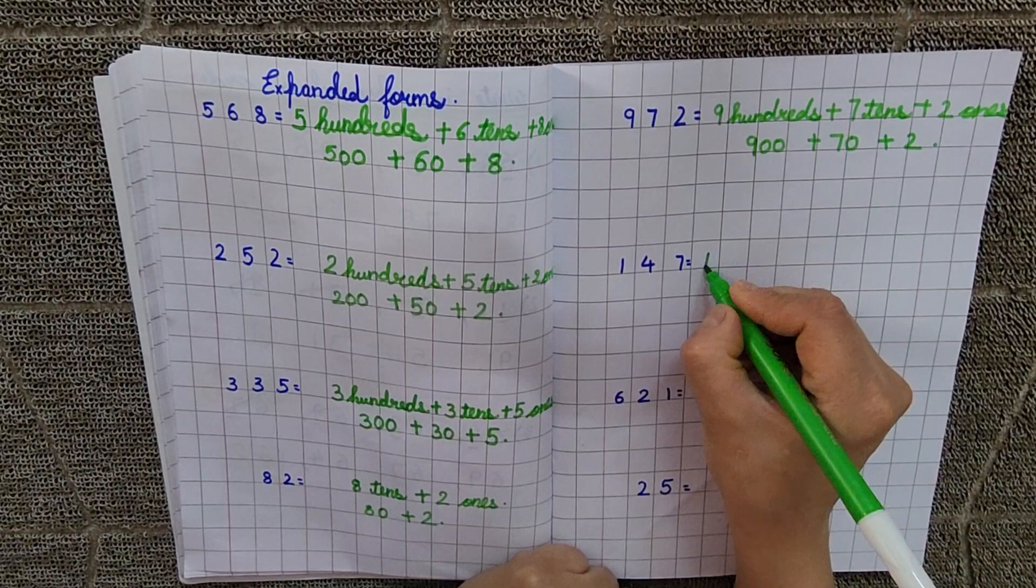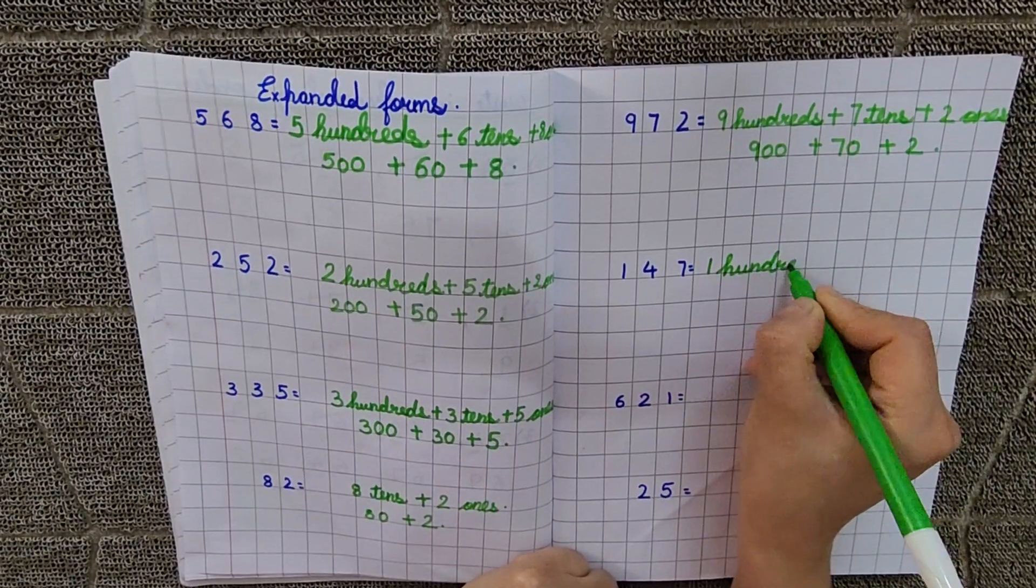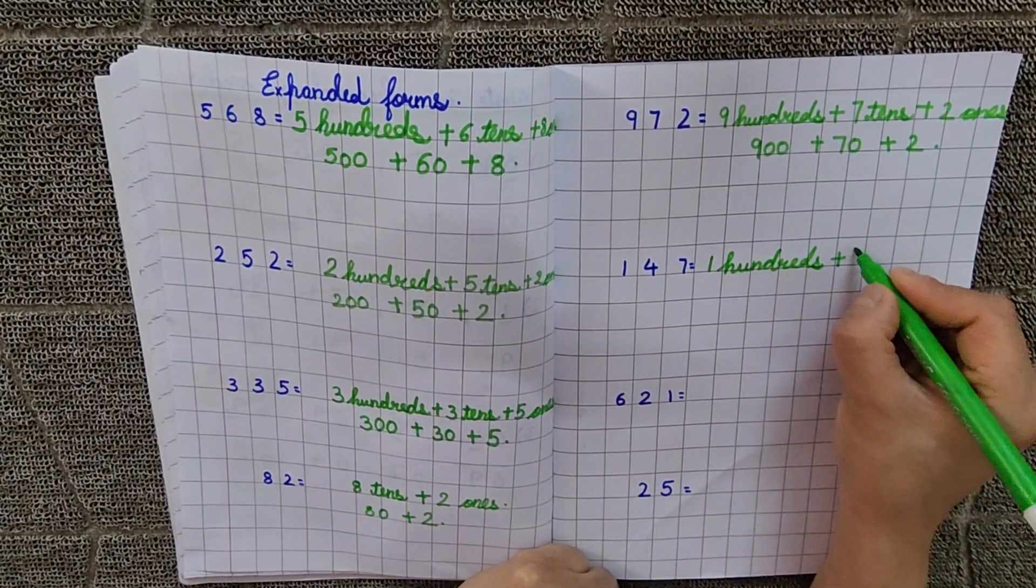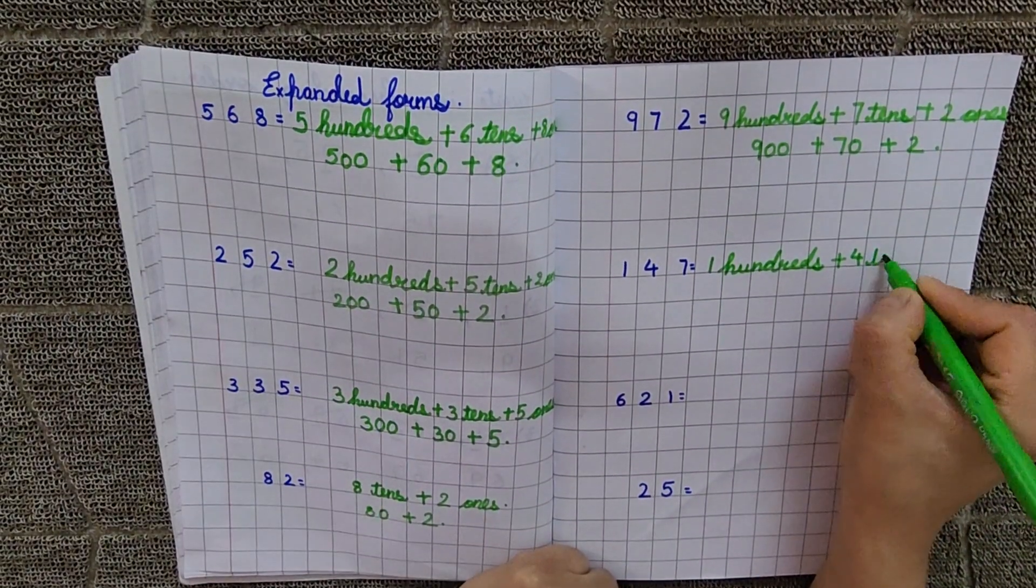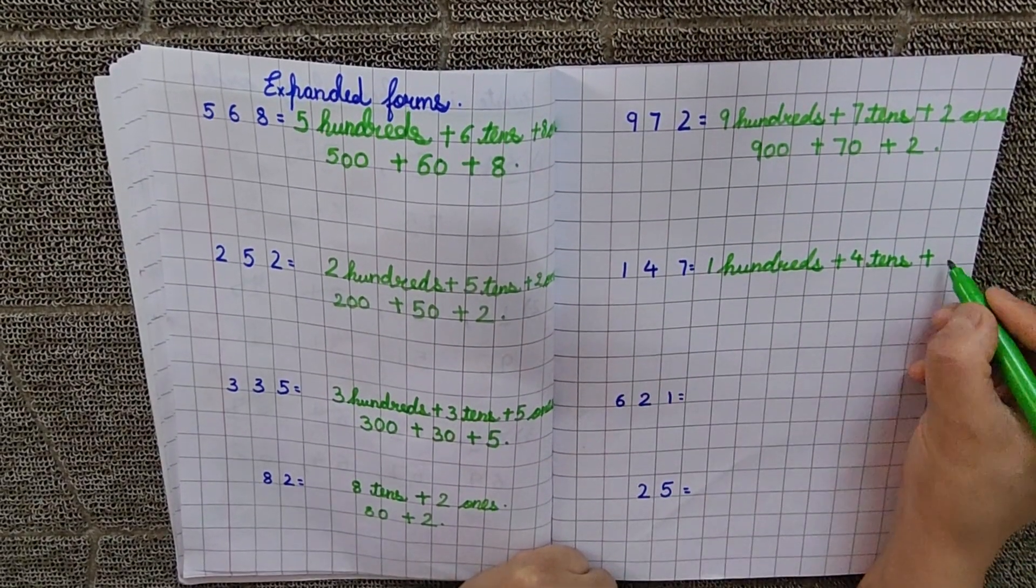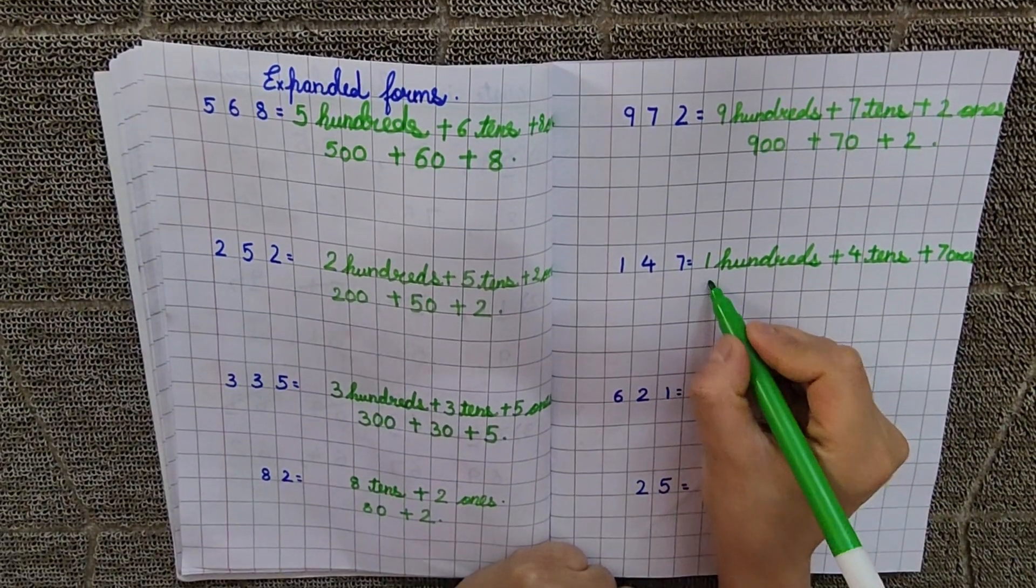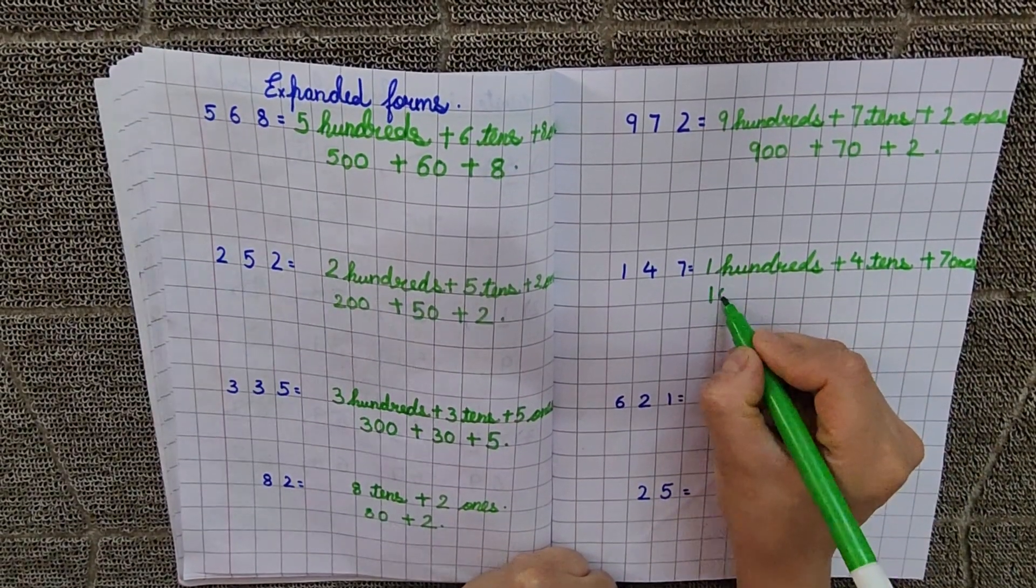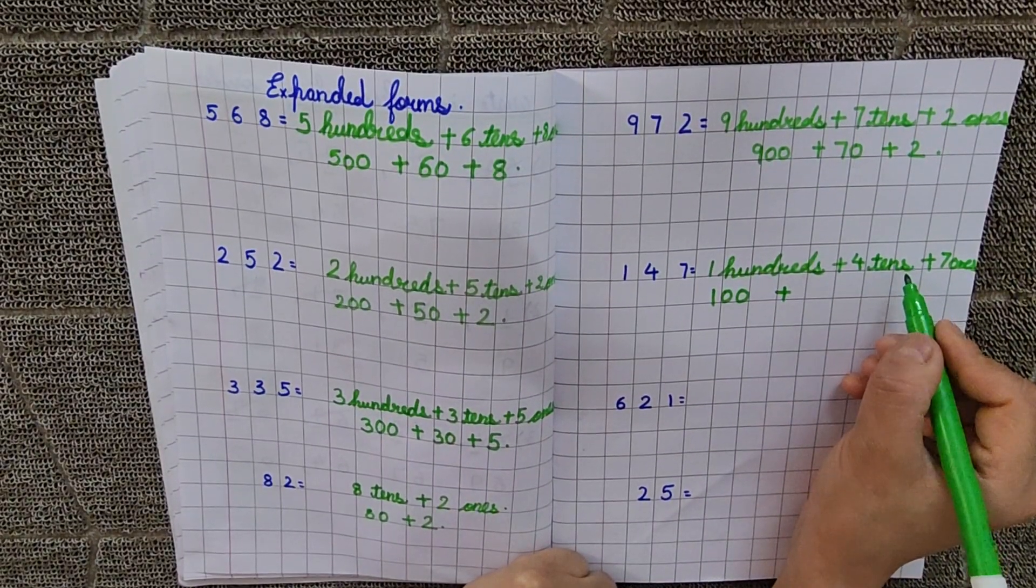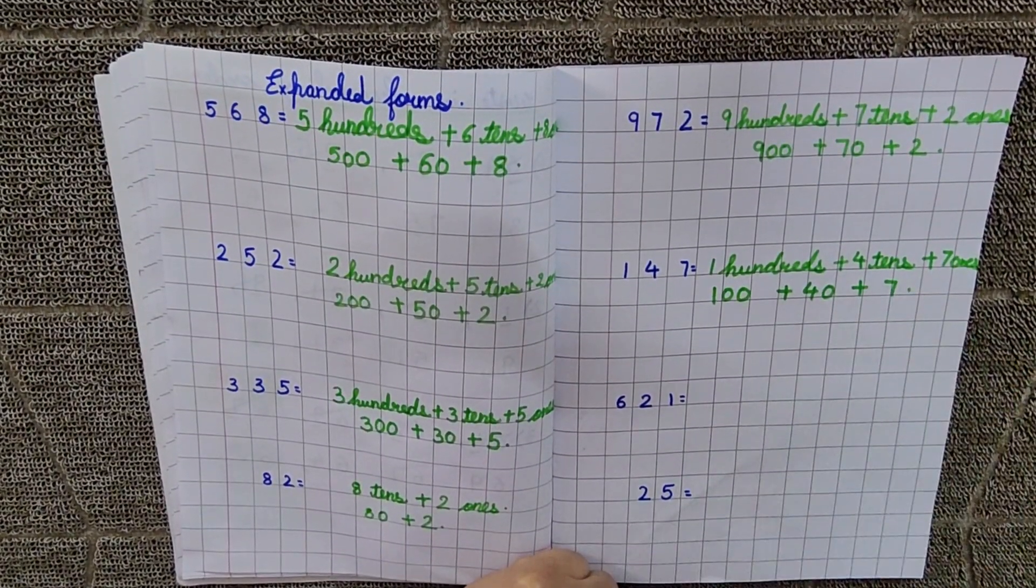Next is 147. 1 hundred plus 4, yes, 4 tens plus 7 ones. Now, we will put the zeros. 100 kesat kitni zeros hoti hain? 2. So, 100 plus 4 kesat, tens kesat kitni zeros hoti hain? 1. So, 40 plus 7.